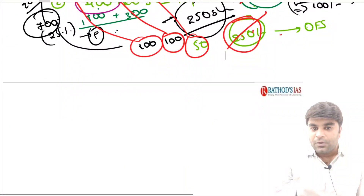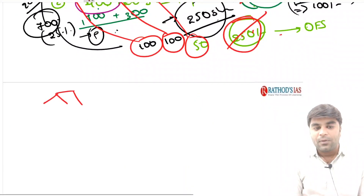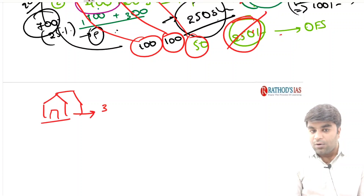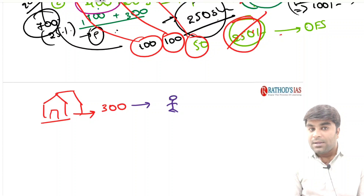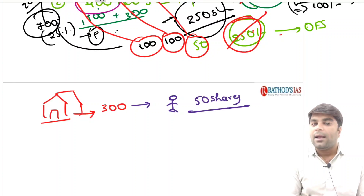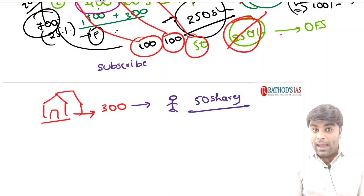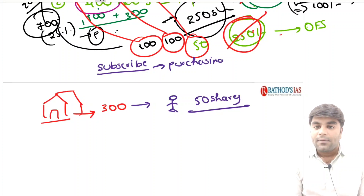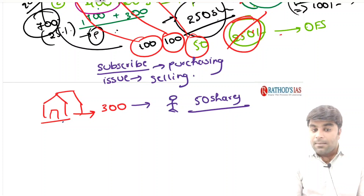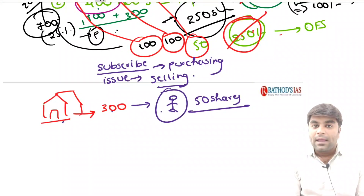Now let us continue. In the initial public offering, the company issued 300 shares. Let us consider that this person purchased about 50 shares. Two important capital market terms: 'subscribe' means purchasing, and 'issue' means selling. This company has issued 300 shares. Out of this, this particular person has subscribed — meaning purchased — about 50 shares.